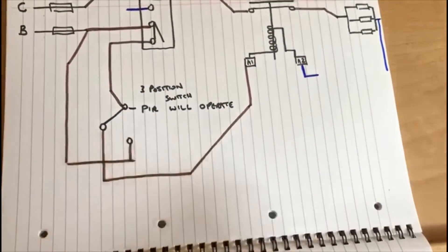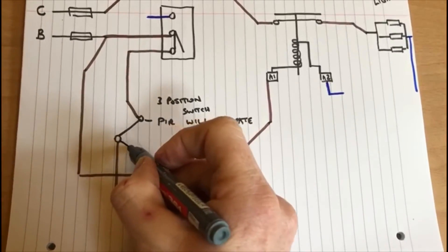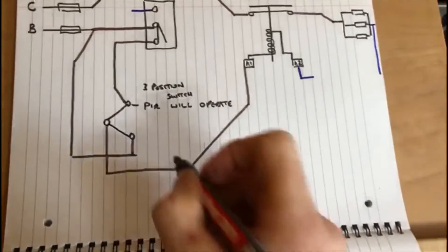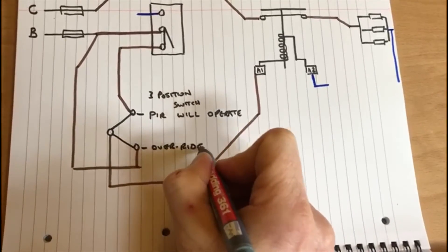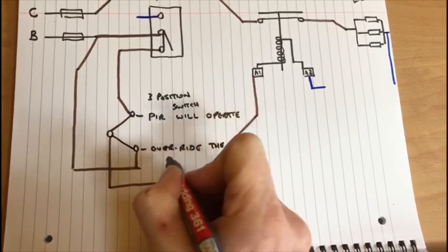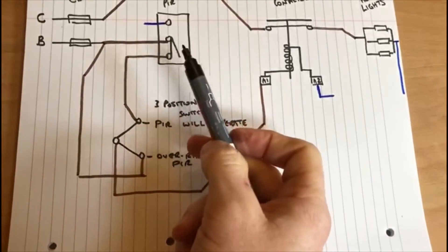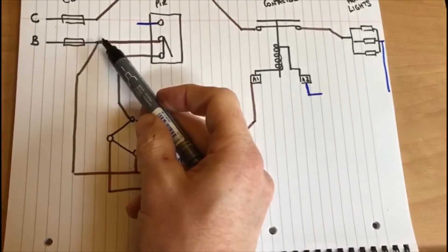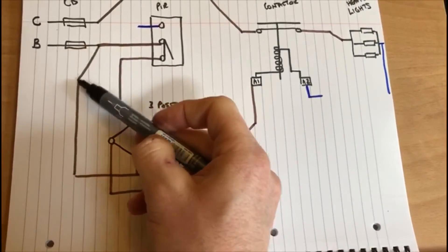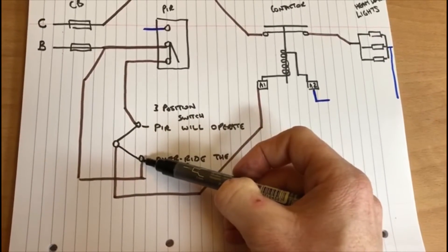In this position which again is now the override position, so this will override the PIR. Again the PIR will still operate, it will still detect you as you walk in, but now we have a permanent feed coming through to this one.